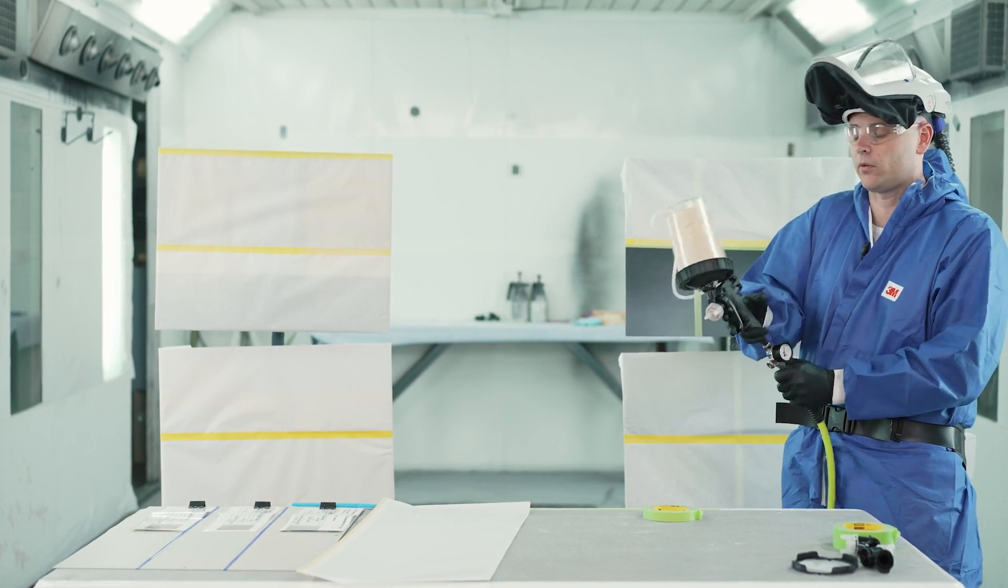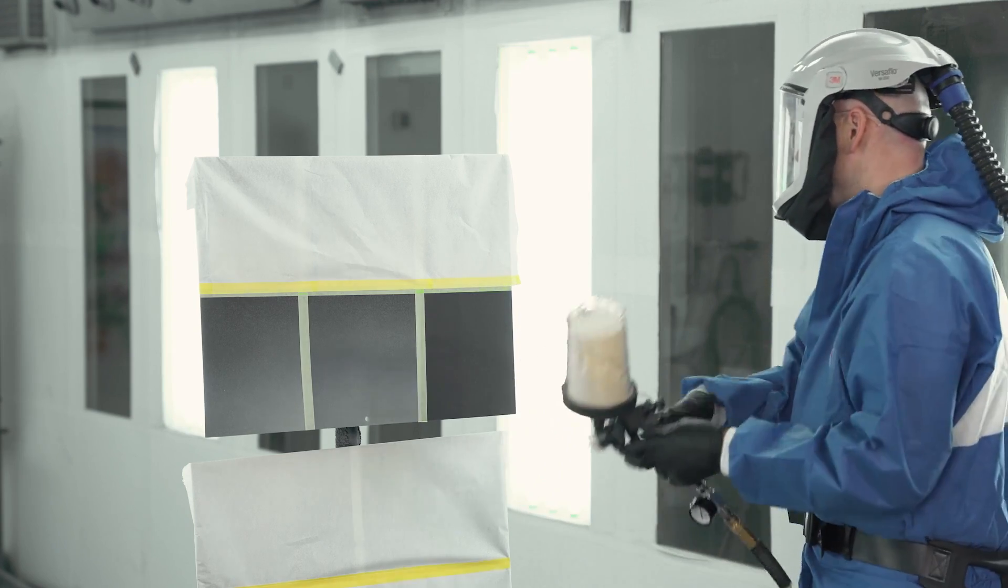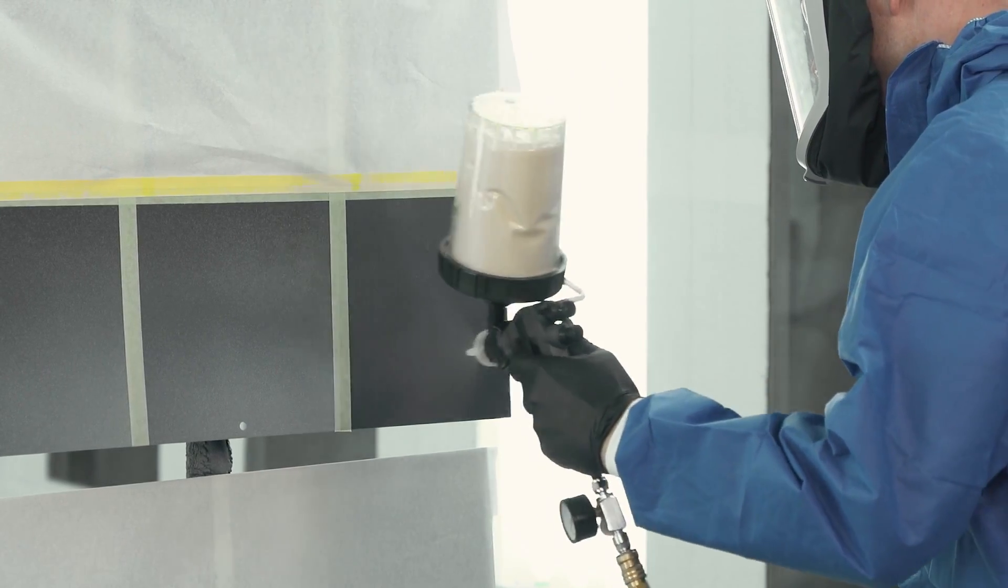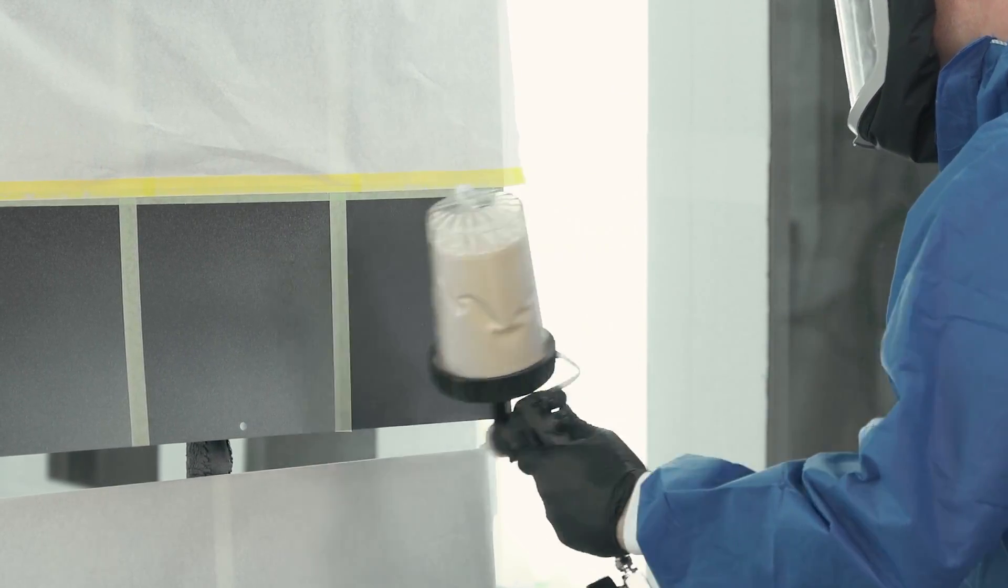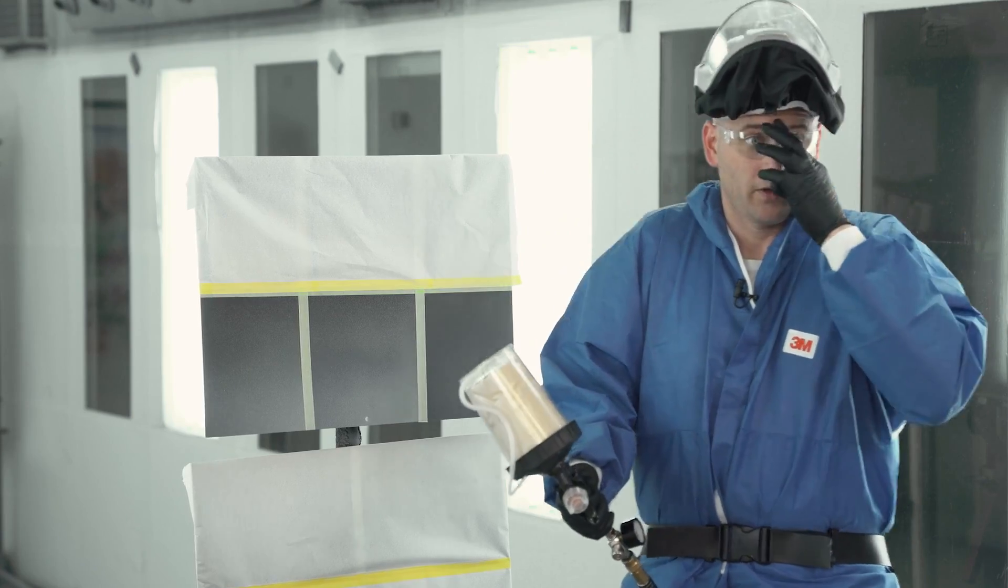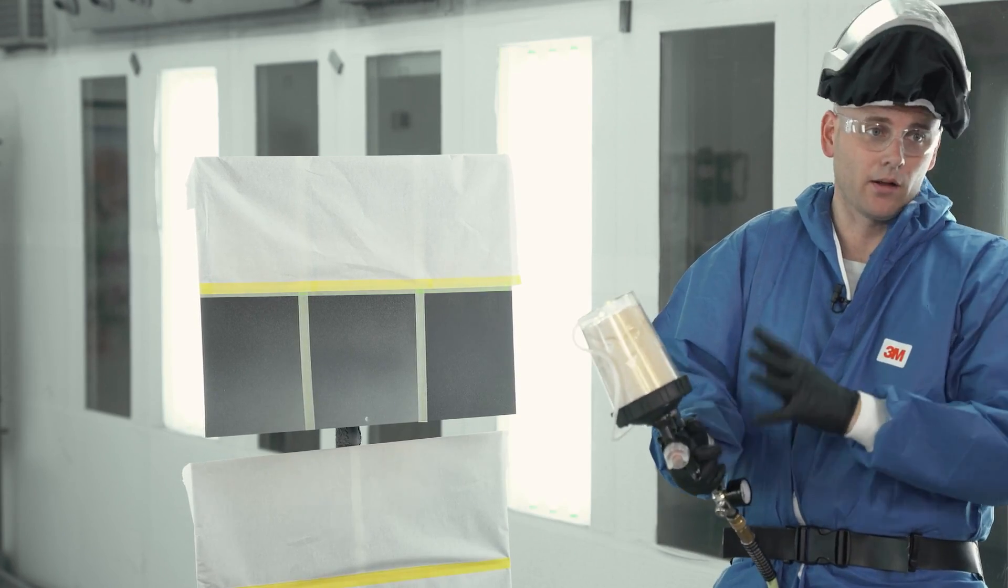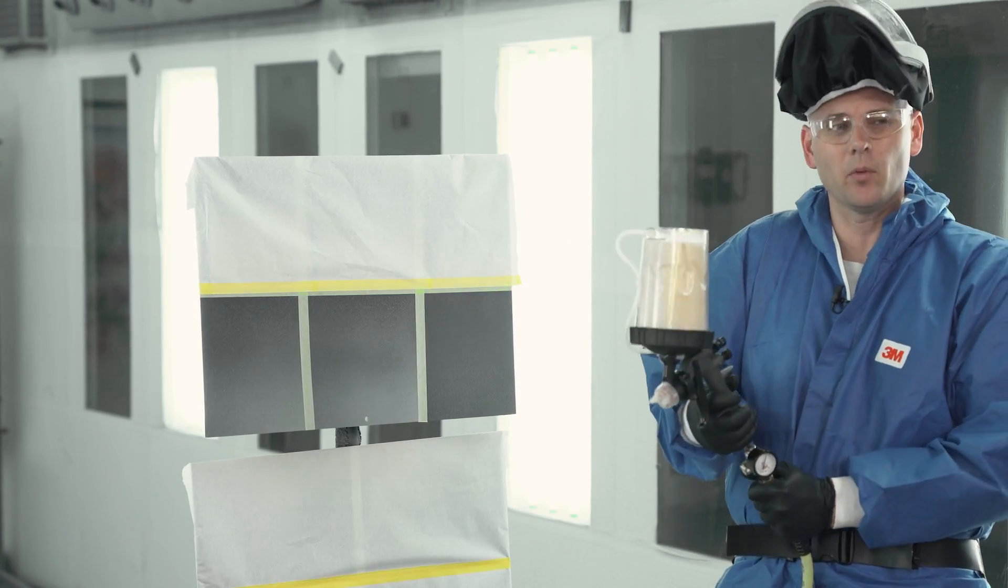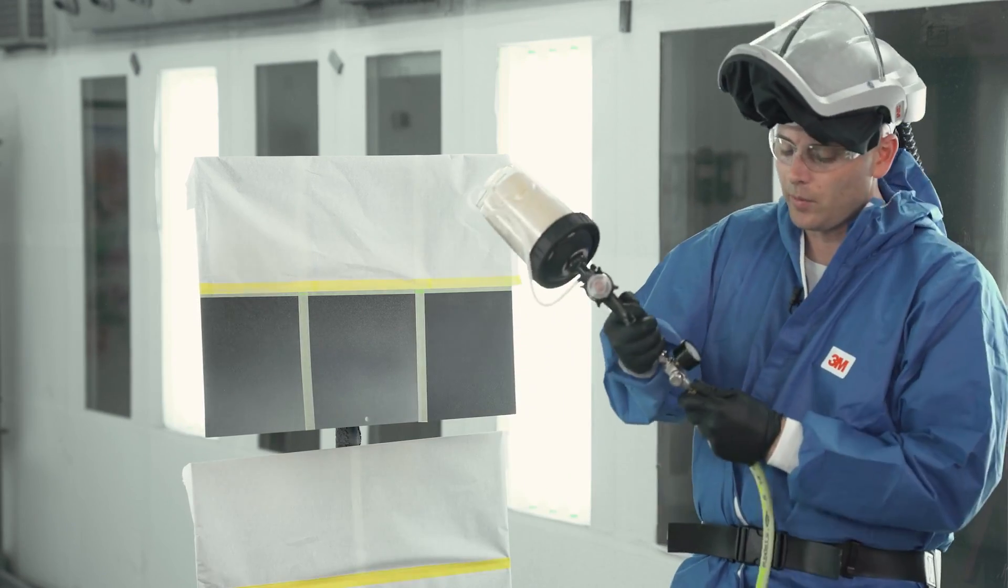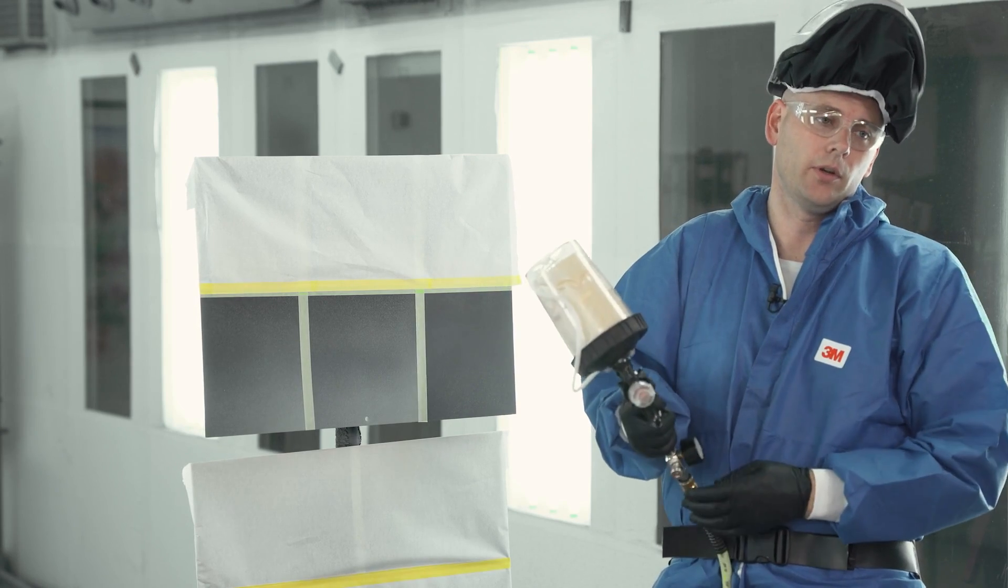So let's get that first coat sprayed. So we have our fine texture applied to our panel. Now I'm going to make our gun adjustments to make it a little bit coarser, and then we're going to apply our second coat. To make it a little bit coarser, I'm going to drop my pressure a little bit and let a little more fluid come through the gun.